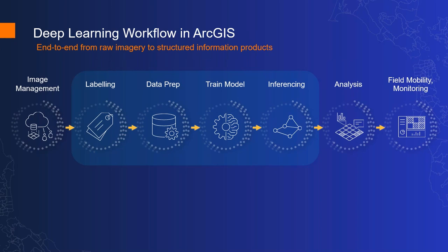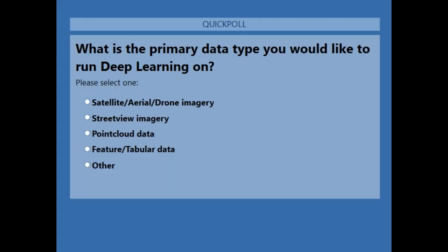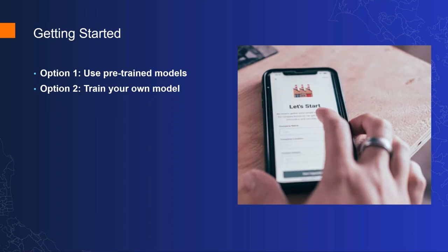Before we hand over to Sandeep, let's do one more poll question. The question is: what is the primary data type you would like to run deep learning on? Seems like 72% of you would use satellite imagery and drone imagery. Awesome — thank you for your participation. Now let's hand the session over to Sandeep to continue.